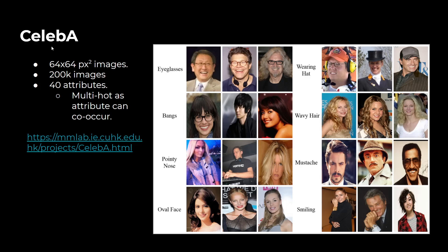There's also CelebA — approximately 200,000 images at 64x64 pixels with 40 attributes. What makes it different is that these attributes are multi-hot: a person can have eyeglasses, bangs, and an oval face simultaneously. So instead of a one-hot label vector, you have a multi-hot vector where each index corresponds to a feature. This dataset is used a lot in generative modeling as well as detection and classification.